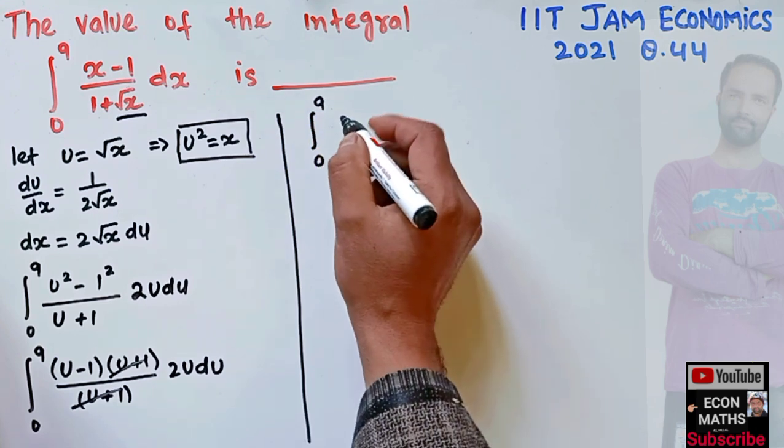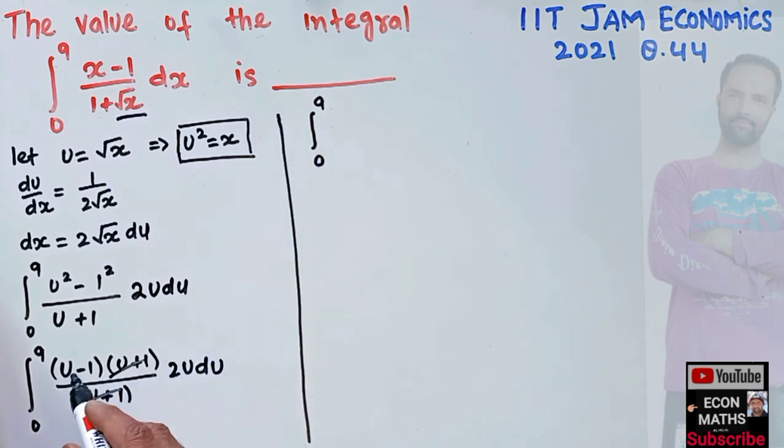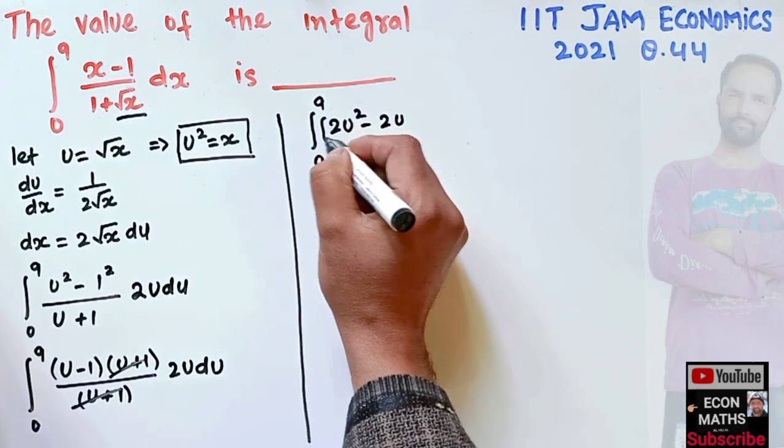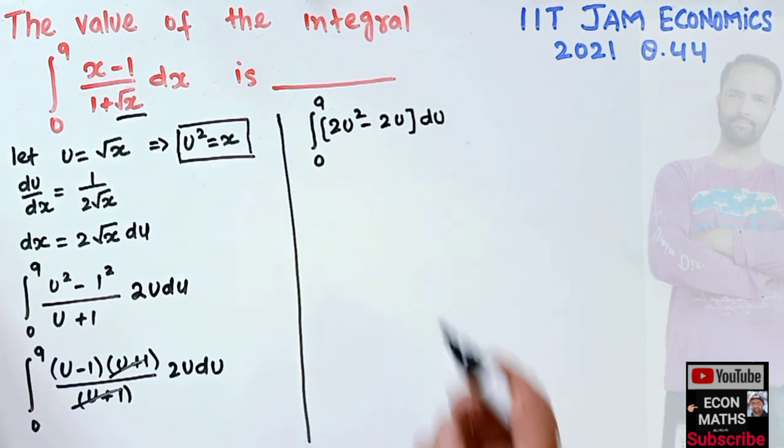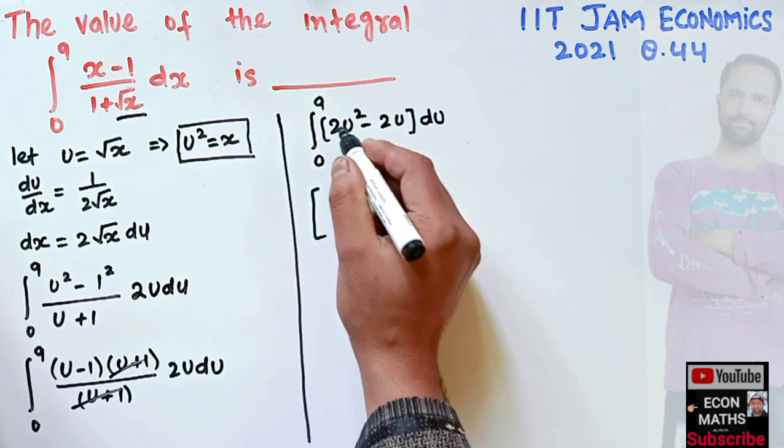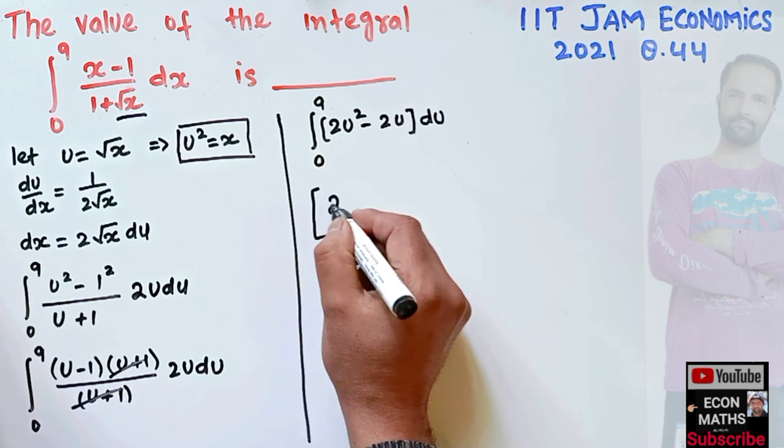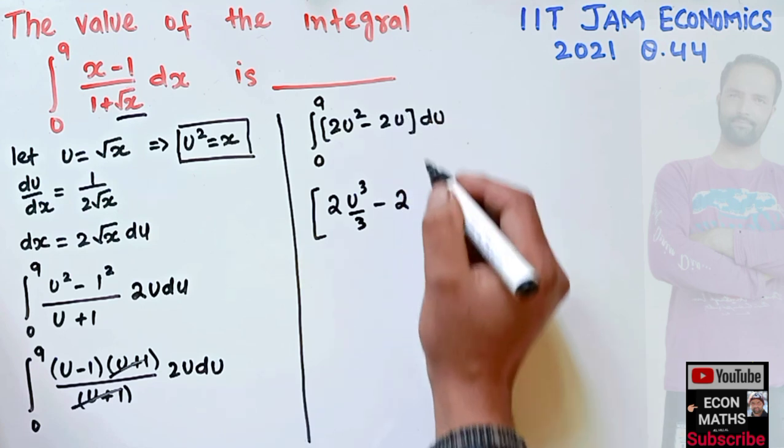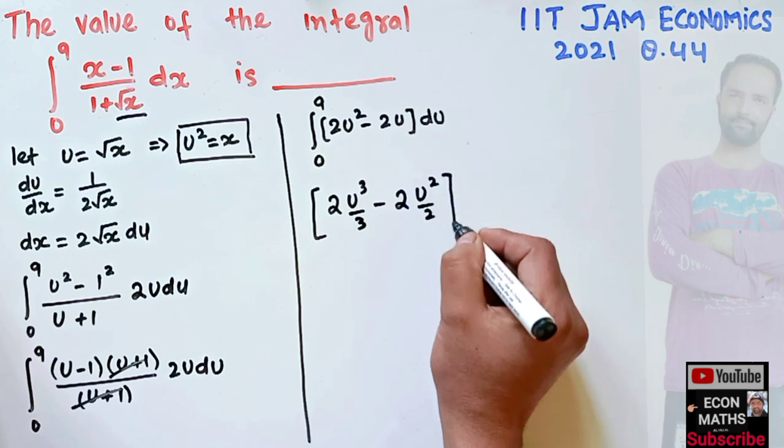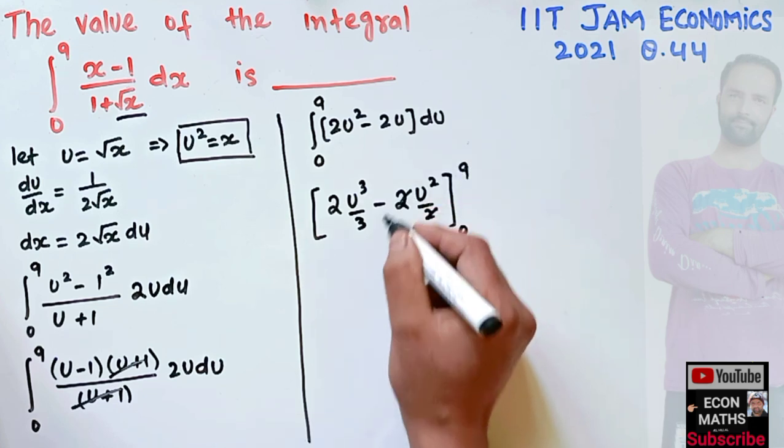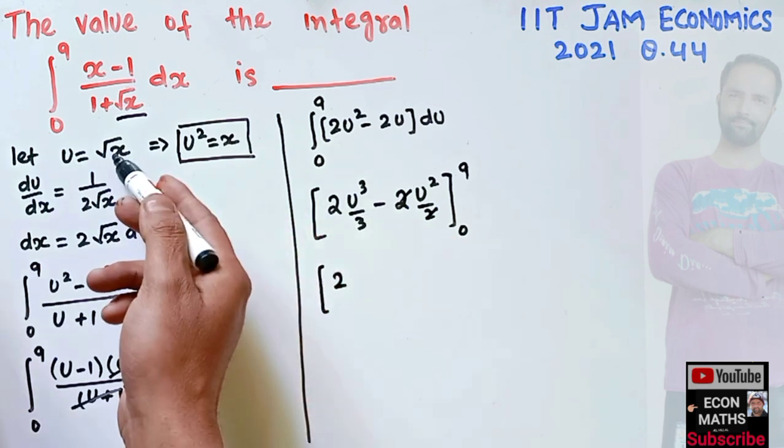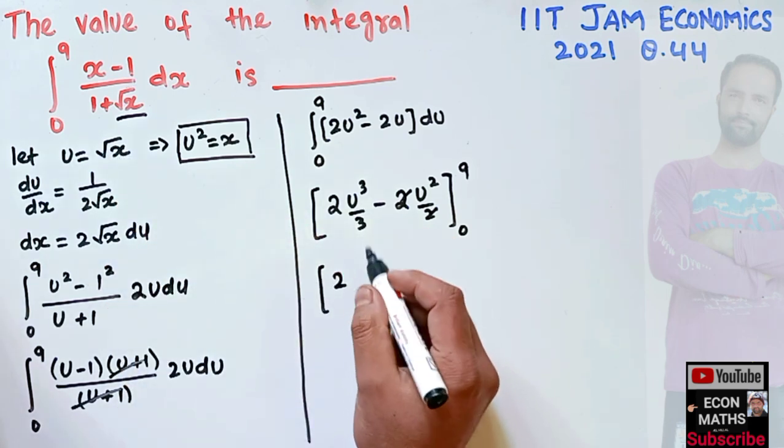This gives us the integral from 0 to 9 of 2u² - 2u du. Doing the integration, the integral of u² is u³/3 minus 2 times the integral of u which is u²/2, from 0 to 9. The 2 and 2 cancel.